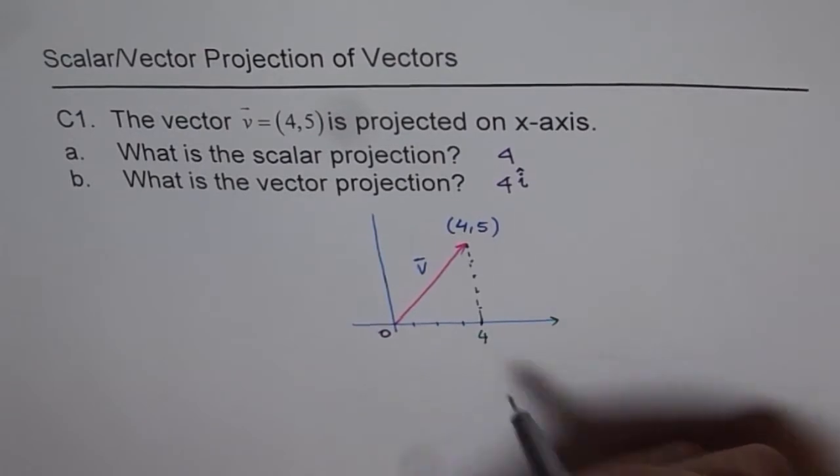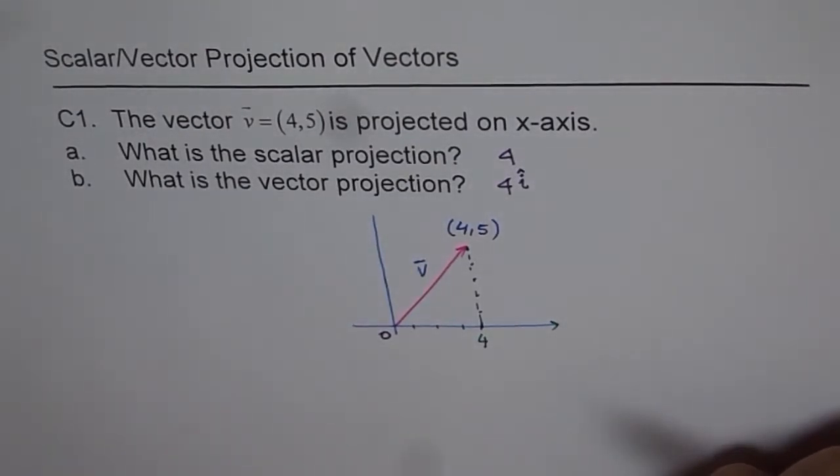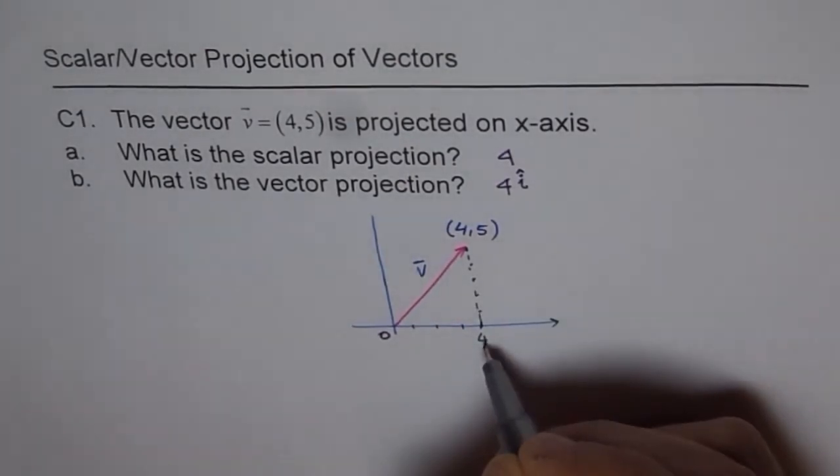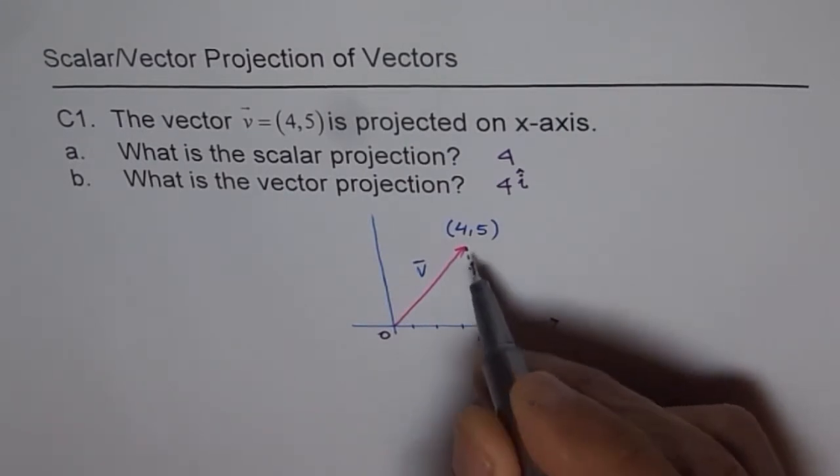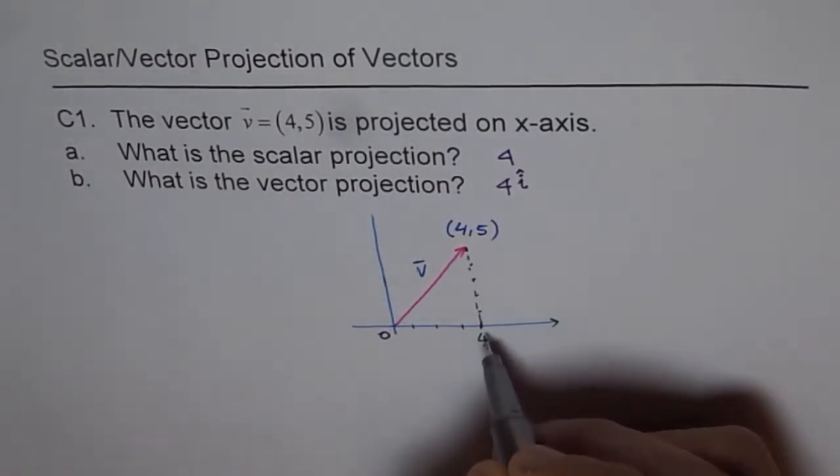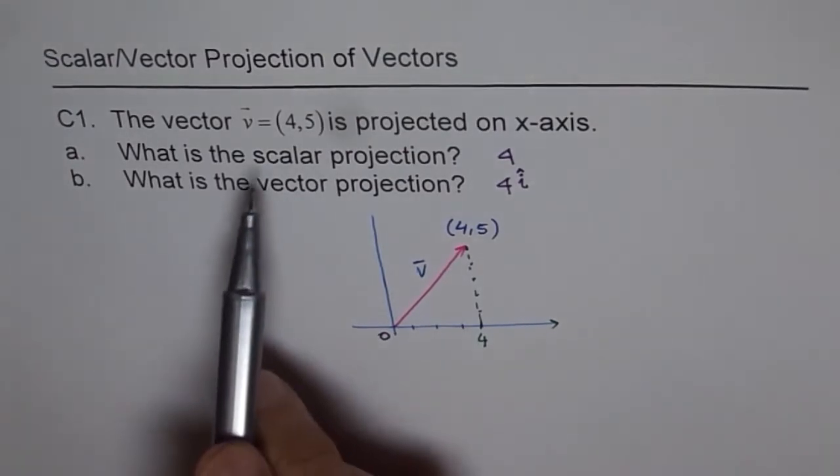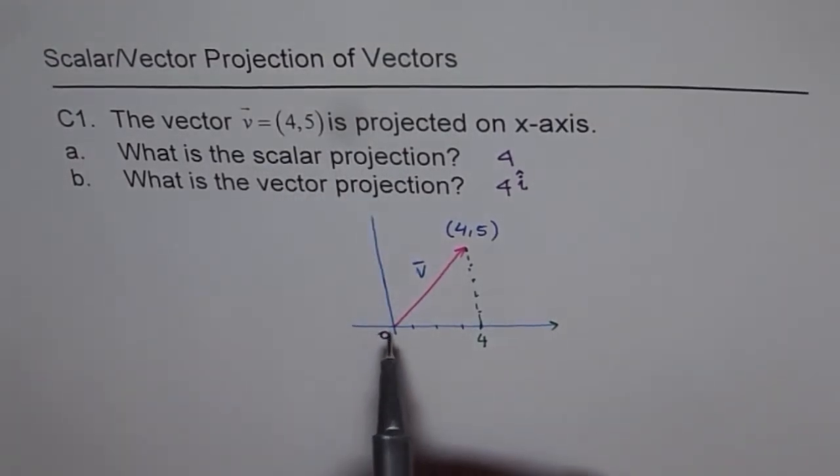That is the projection of the vector on x-axis. Now when we are asking for scalar projection then we just give you the magnitude 4, and when we are asking for vector projection then we specify the direction.